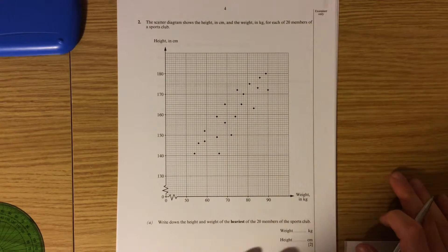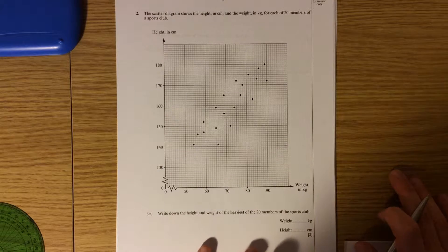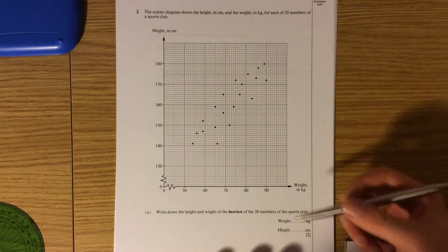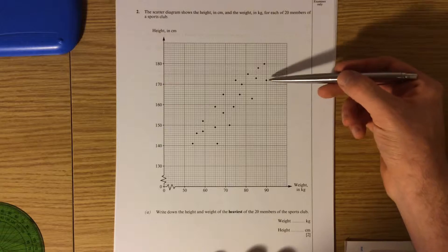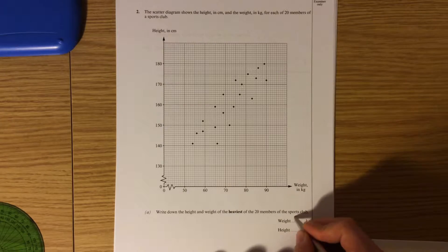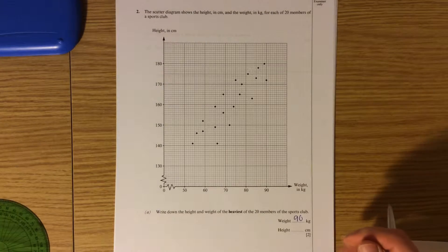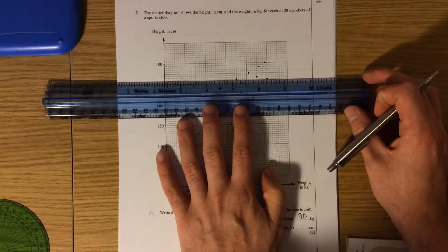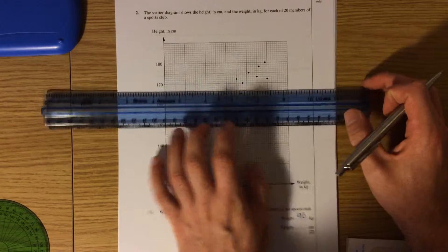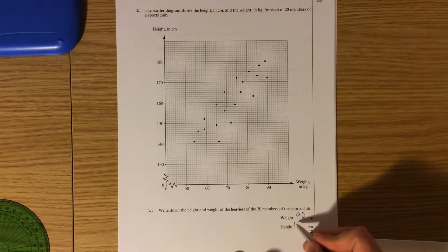Question number 2. Scattergraphs. Write down the height and weight of the heaviest of the 20 members of the sports club. Weight is across the bottom. So the heaviest person is this individual here, and their weight is 90 kilograms. To find their height we're going to use a ruler and we're going to read across, and that is 172 centimeters.